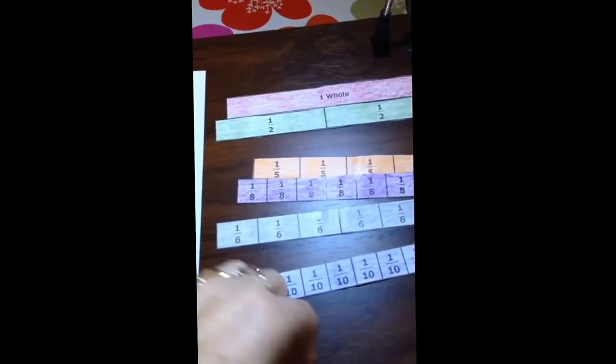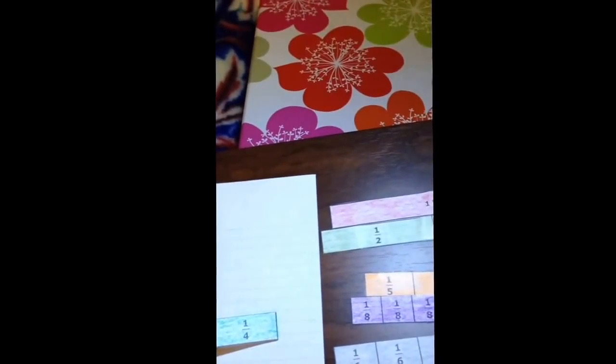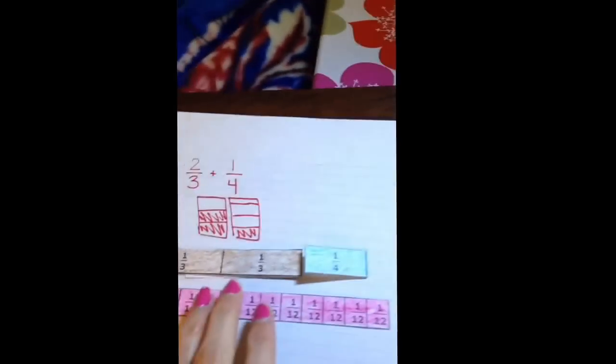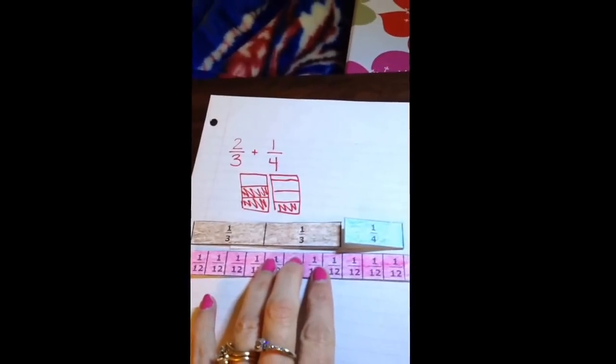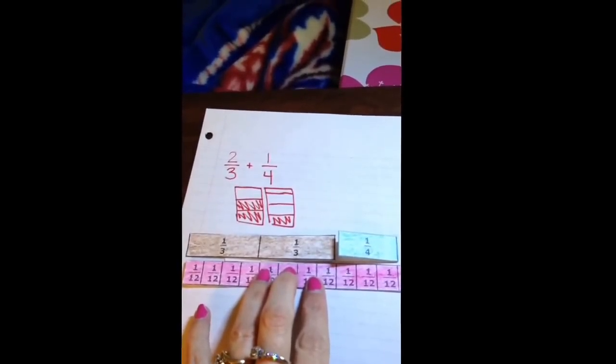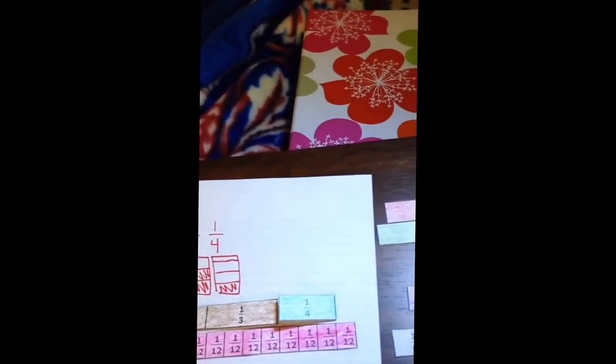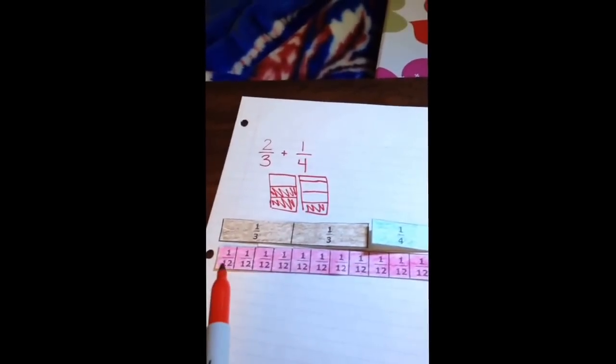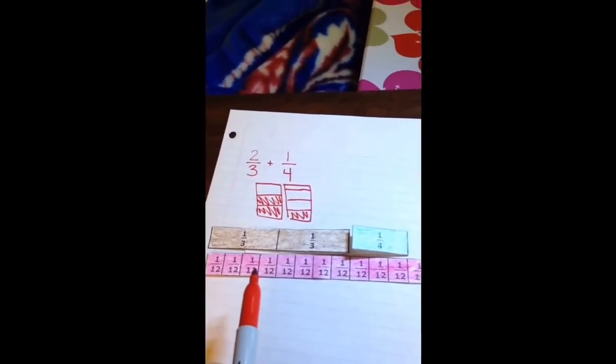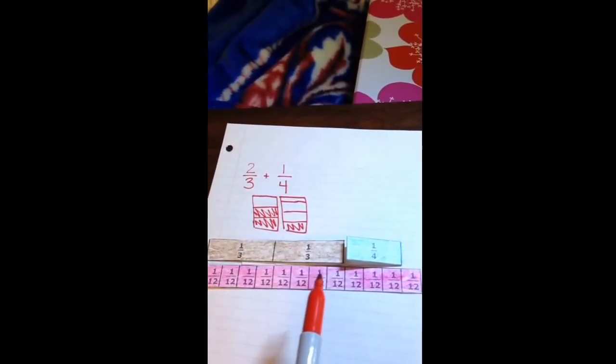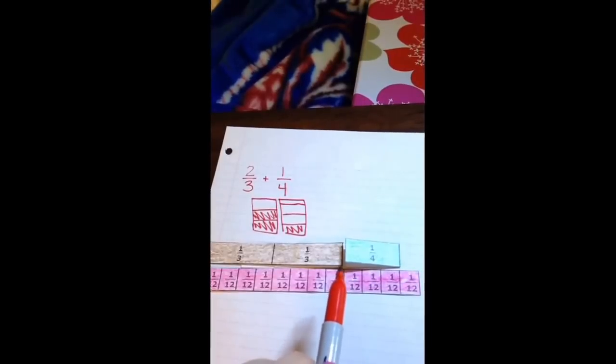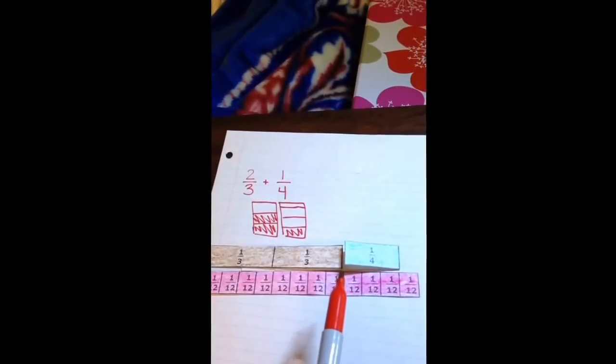Let's try twelfths. And you can see when I line up the twelfths that this one works because I have one, two, three, four, five, six, seven, eight twelfths that represent two thirds,